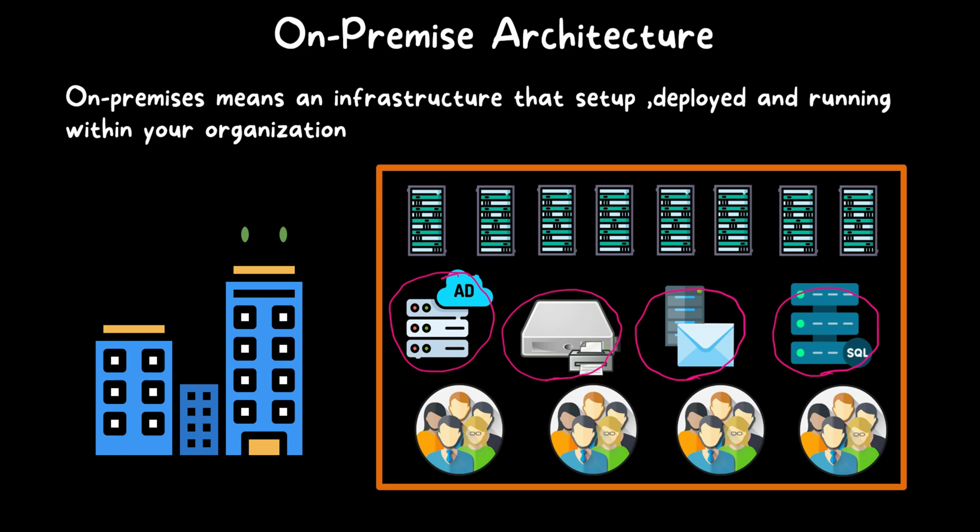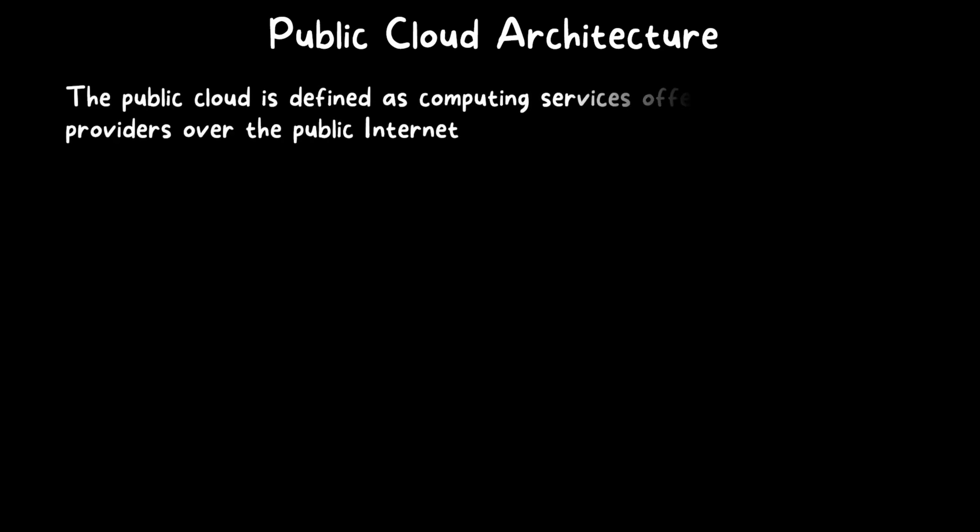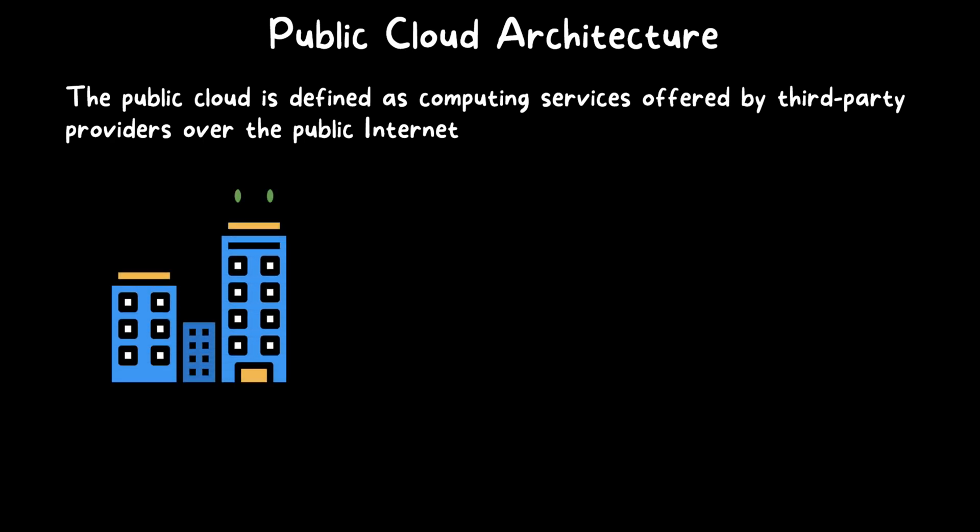Basically, on-premise architecture is an infrastructure setup that is running within the organization and is not available to the public. Now, what is public cloud architecture? The public cloud is defined as computing services offered by a third-party provider over the public internet. This means the infrastructure is not hosted inside the organization — it is hosted by a third party, and the organization accesses the services using the public internet. Instead of setting up a local data center, they use a third-party service provider to host their infrastructure within the public cloud.